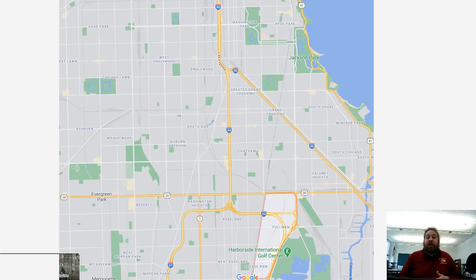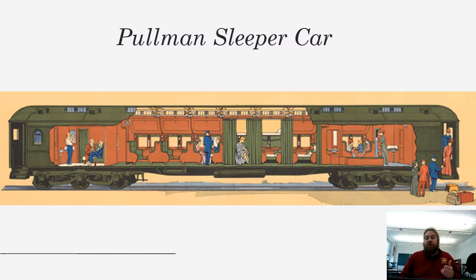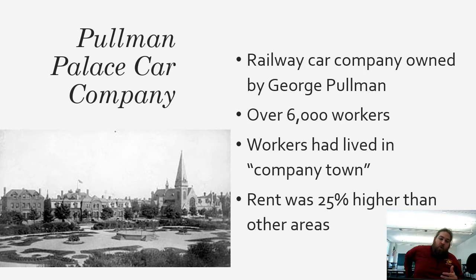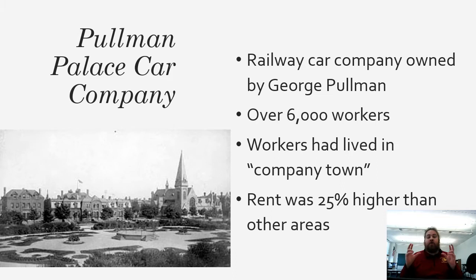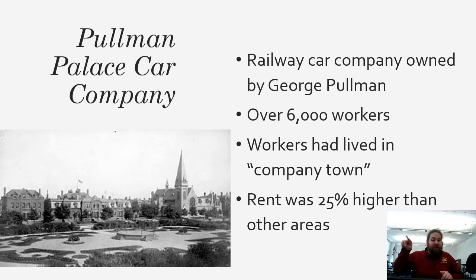Another great Chicago labor story is the Pullman Strike of 1894. The Pullman neighborhood is on the far south side of Chicago. Pullman originally started as a neighborhood for workers of the Pullman sleeper car company, which built and maintained railroad sleeping cars. The company had about 6,000 workers who all pretty much lived around the factory. The apartments and houses were all owned by the Pullman Palace Car Company — we call that a company town, where the person you work for is also the person you rent from and whose store you shop at. Rent was about 25% higher than anywhere else in the city.